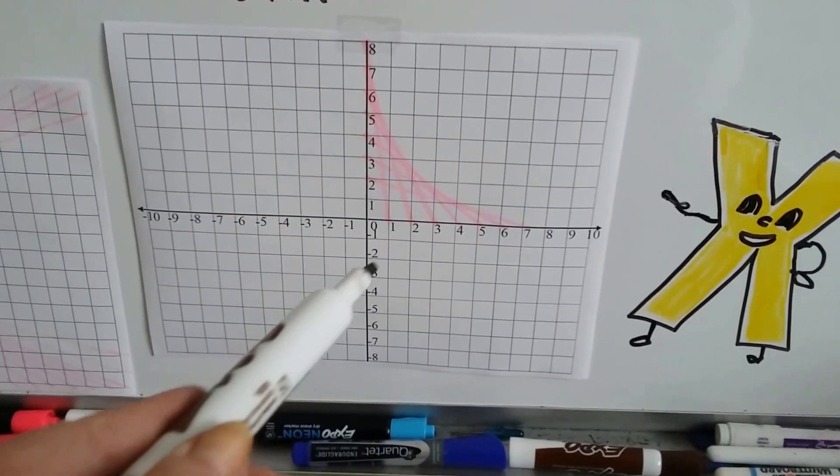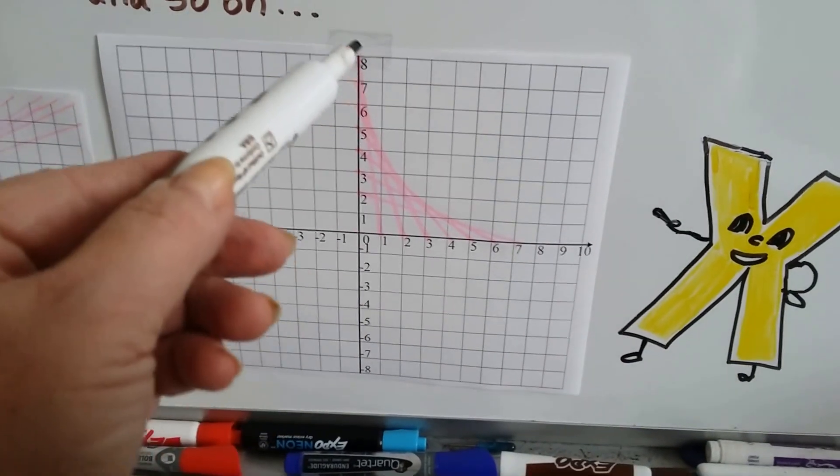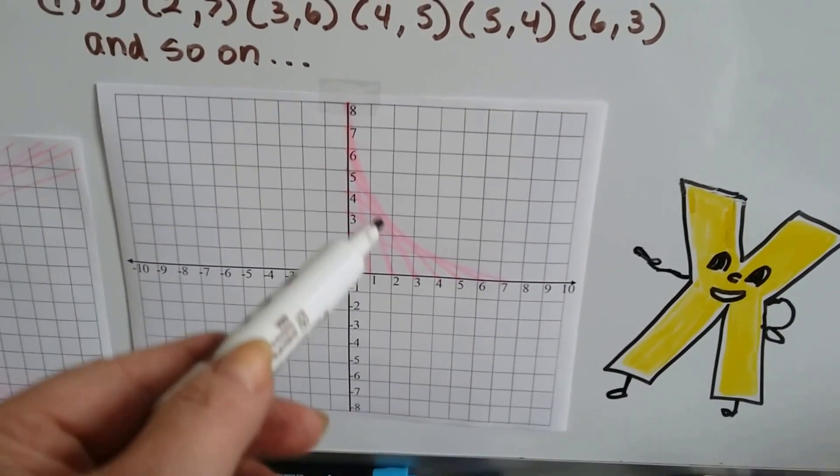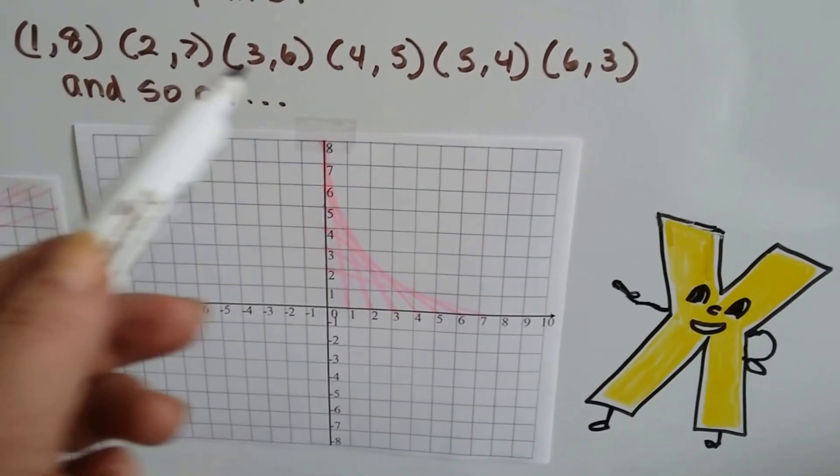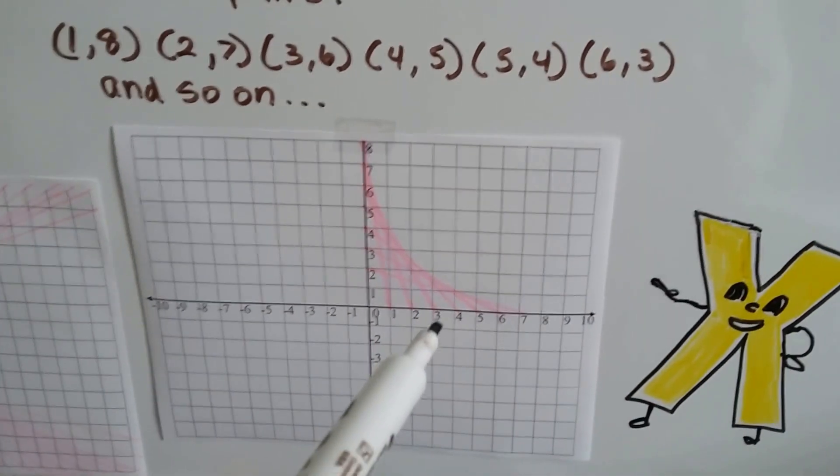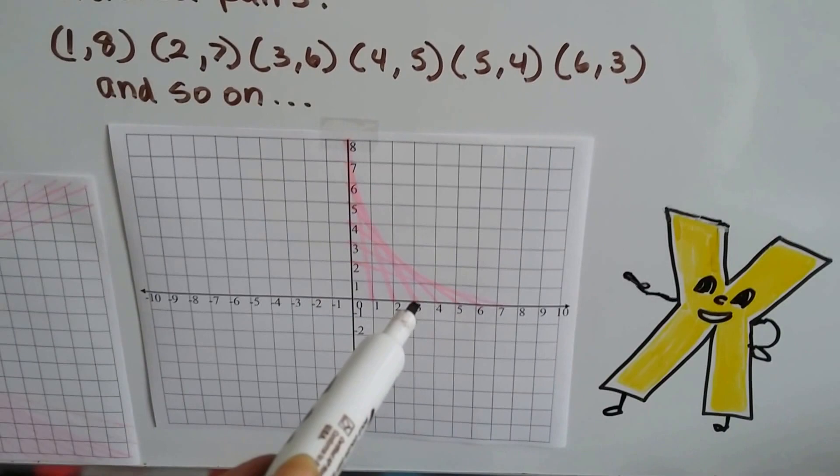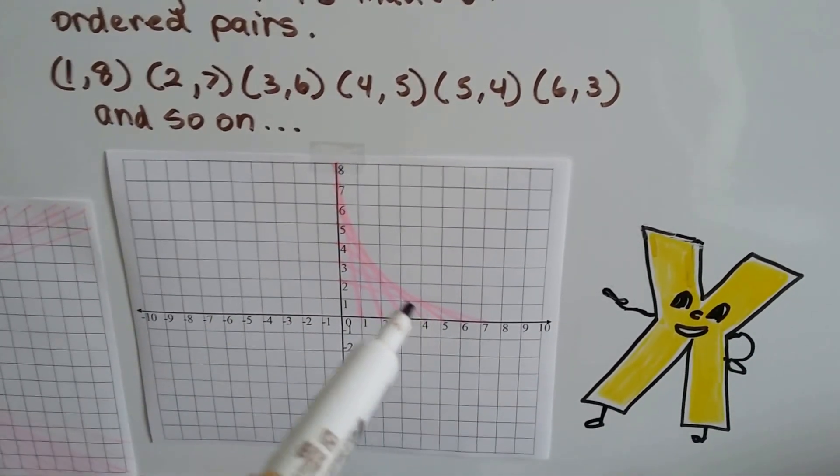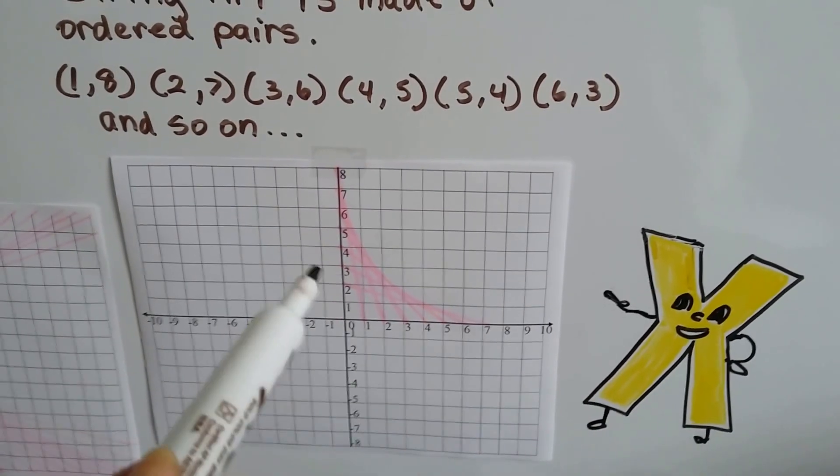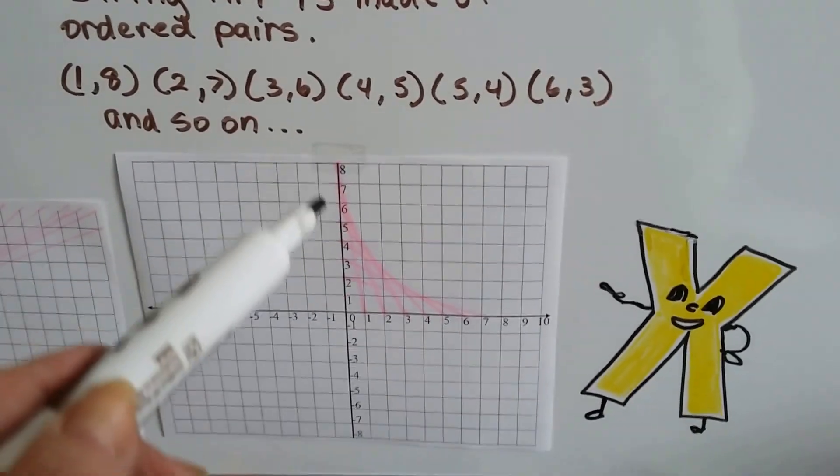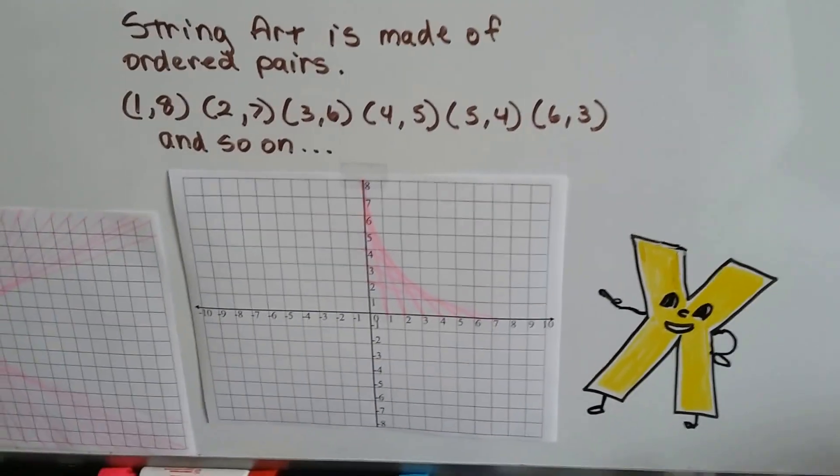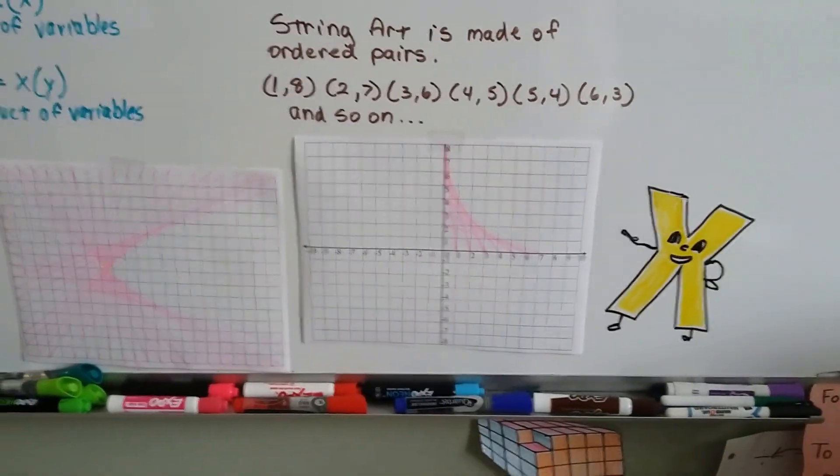What you do is you start at one and go all the way up to the top one with your first line. Then you go to two and seven. Here's the ordered pairs. Then you go from three on the X to six on the Y. Then you go from four on the X to five on the Y. And you just keep moving it and moving it, and you can make this nice curve.